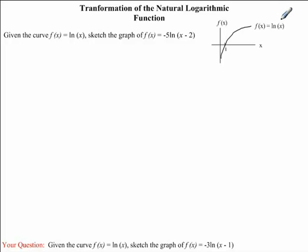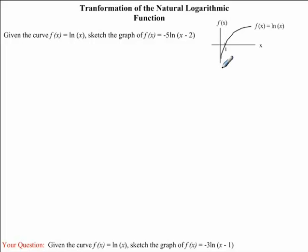Now let's take a closer look at this graph. We'll notice that it has an x-intercept at the point (1, 0), and that it also has a vertical asymptote at x equals 0. This means that the graph approaches the line x equals 0, but it never hits it.